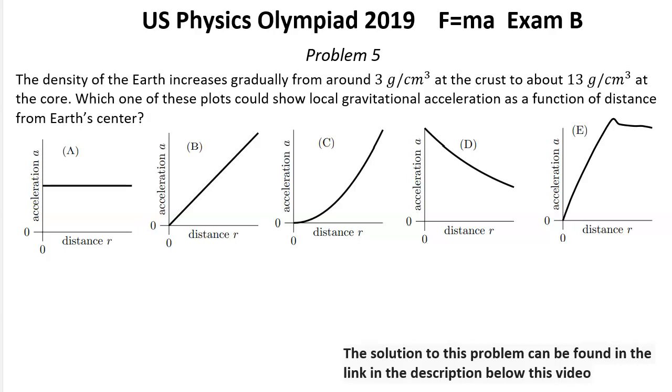Solution for problem number 5. The gravitational acceleration is zero at the center of the earth by symmetry. So it means that choices A and E are wrong. If the density is constant, acceleration is proportional to r. That's a well-known fact. It could be proved very easily.